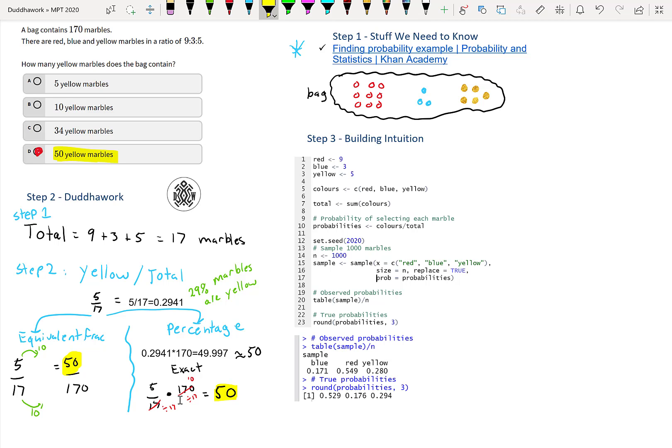We solved the question. I hope this makes sense. As a challenge, you can find how many of the other colors there are in the bag and add them up to see if you get 170. The third step to solving any problem is to build some intuition. Here I decided to go way deeper and introduce some programming because this is a very useful tool.